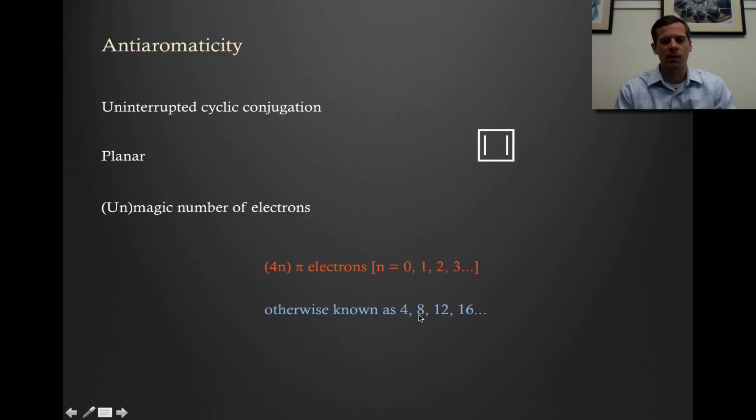Which equates to 4, 8, 12, 16, et cetera pi electrons. So we have these three requirements met, we have an antiaromatic system. It turns out that this term and really this concept of antiaromaticity was actually coined by Professor Ron Breslow here at Columbia. There's been a very deep history in studying aromaticity and antiaromaticity right here at this institution.